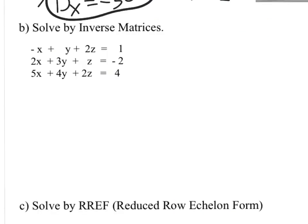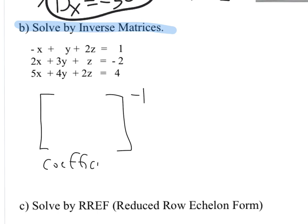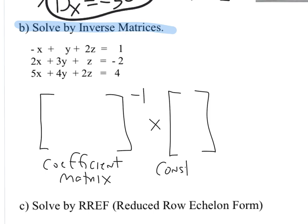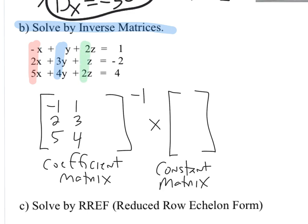Next, we solve the same system using inverse matrices. We take the inverse of the coefficient matrix and multiply it by the constant matrix. The coefficient matrix has x-coefficients -1, 2, 5; y-coefficients 1, 3, 4; and z-coefficients 2, 1, 2. On your calculator, take the inverse of that matrix and multiply it by the constant matrix: 1, -2, and 4.